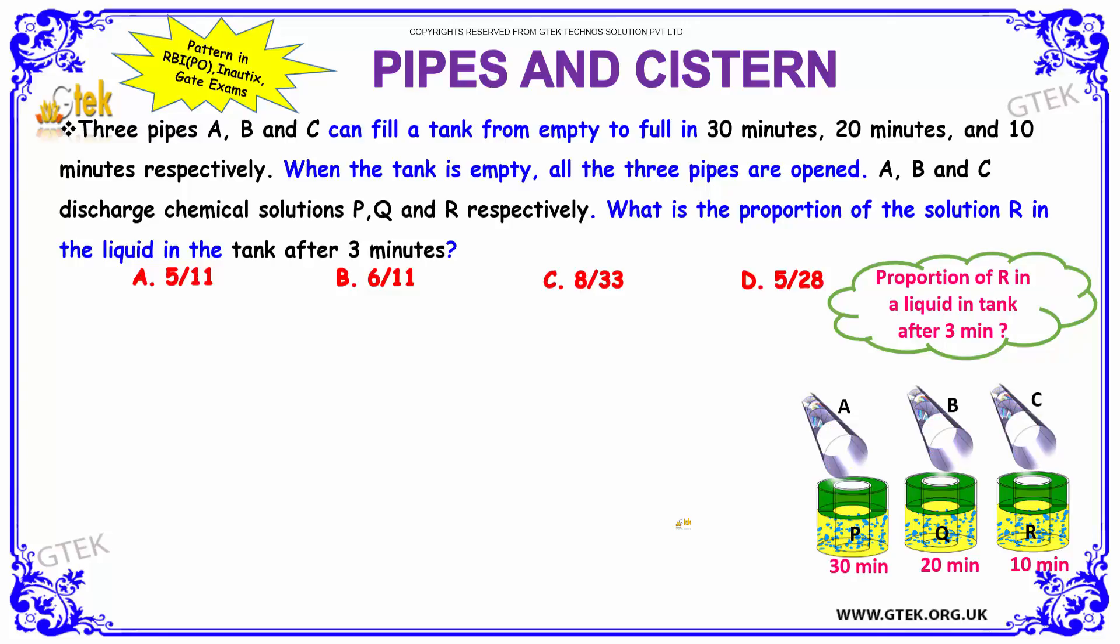That is A, B, and C discharge chemical solutions that is P, Q, and R respectively. What is the proportion of the solution R in the liquid in the tank after 3 minutes? So that is what we have to find. Our options are as follows.